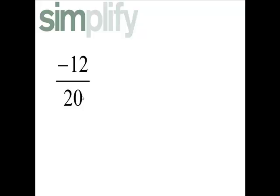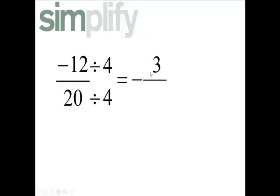Negative 12 over 20. Now it turns out 4 can go into both these numbers, so the greatest common factor for 12 and 20 is 4. So we're going to divide 12 by 4 and 20 divided by 4. Negative 12 divided by 4 will be a minus 3 — I'm going to put the minus out front. 20 divided by 4 is 5, so negative 3 fifths.